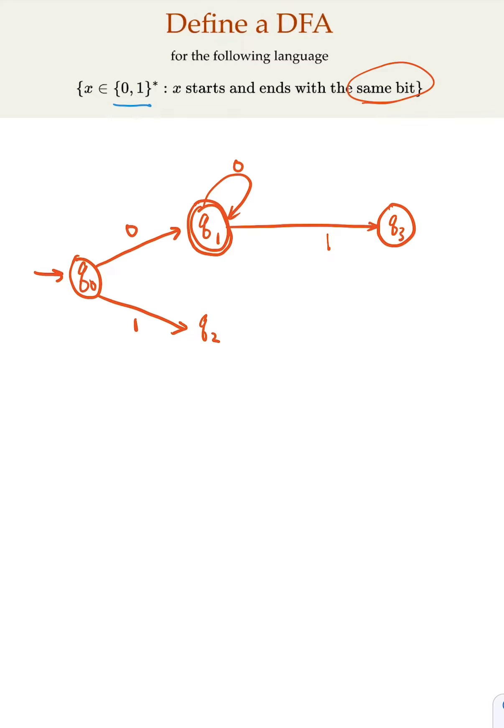In that state, you could have a 0, which brings you back to the accepting state. Because if it ends, Q1 is good.